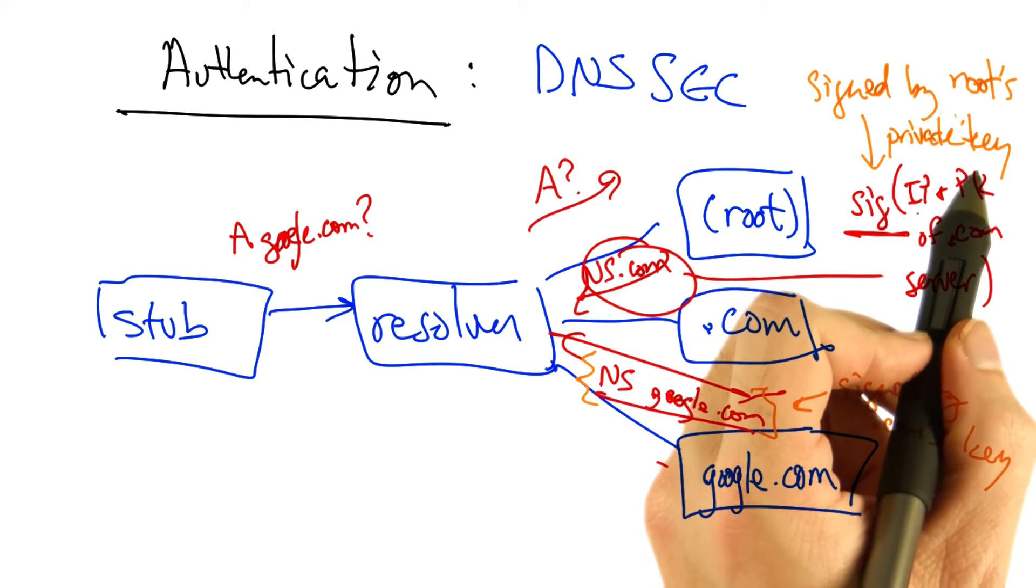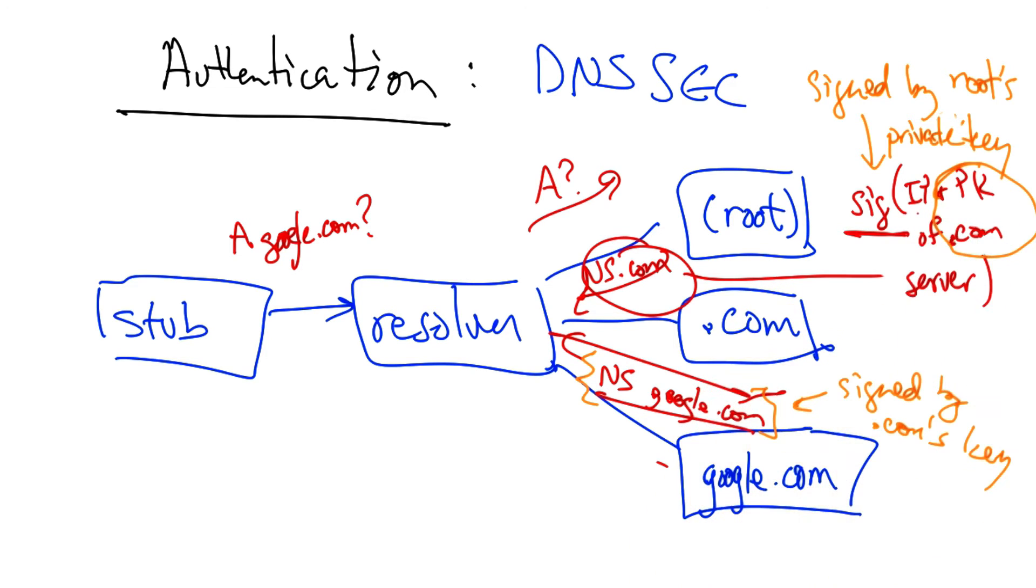But the root has told the resolver the public key corresponding to .com, and thus the resolver can check that this referral is not bogus, and in fact, came from the .com server.